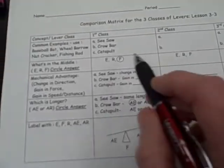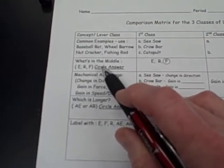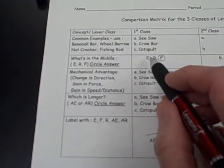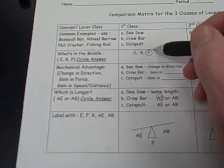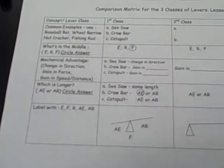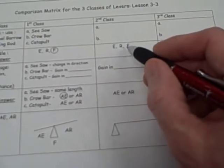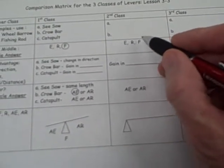Then in the next row, you tell me what is in the middle. Effort, fulcrum, and resistance. Now, the first class lever, we always know fulcrum is in the middle, so we circle that. So, whatever second class lever has in the middle, you would circle that.